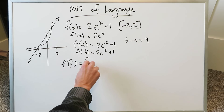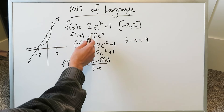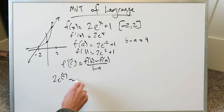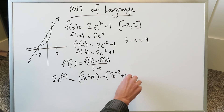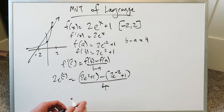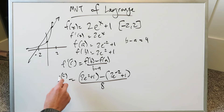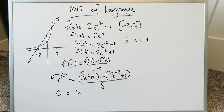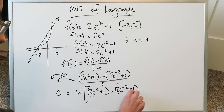We apply the formula: f'(c) = [f(b) - f(a)] / (b - a). The derivative with c gives 2eᶜ. Setting it equal to [(2e² + 1) - (2e⁻² + 1)] / 4. Taking the 2 to the other side, it divides everything and the 4 becomes an 8. To solve for c, bring in the natural log: c equals the natural log of the entire quotient [(2e² + 1) - (2e⁻² + 1)] / 8.